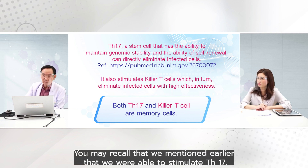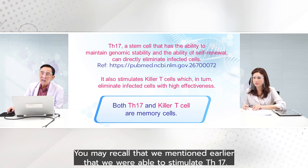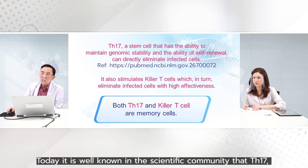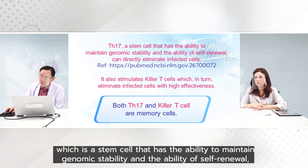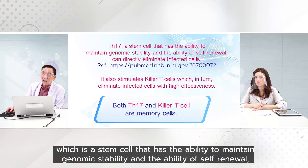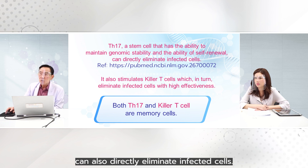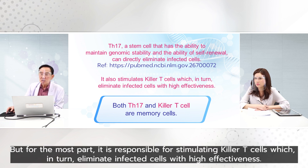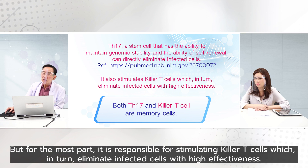It is important to recall that we mentioned earlier that we were able to stimulate TH17. It is well known in the scientific community that TH17, which is a stem cell with the ability to maintain genomic stability and self-renewal, can also directly eliminate infected cells. But for the most part, it is responsible for stimulating killer T cells, which in turn eliminate infected cells with high effectiveness.